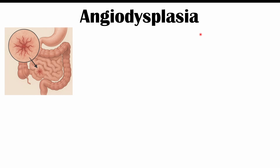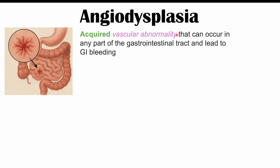Angiodysplasia — if we break down the word: 'angio' refers to blood vessels or arteries, 'dys' refers to something abnormal, and 'plasia' refers to growth or a process of growing. That's literally what this condition is — an issue with the growth of blood vessels.